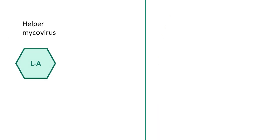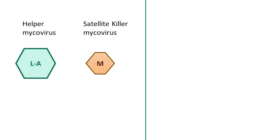The production of killer toxins is closely associated with the presence of a helper LA mycovirus and a smaller satellite mycovirus called killer mycovirus M, which carries the genetic information necessary for encoding killer toxins.